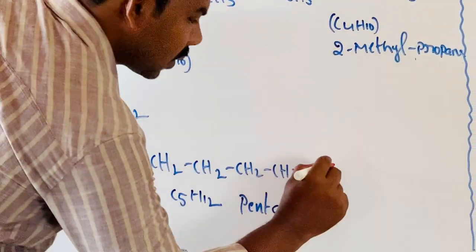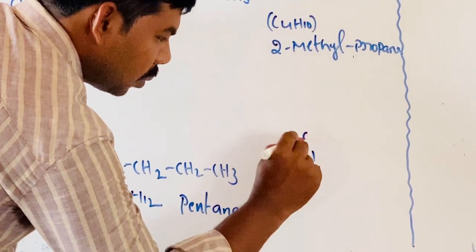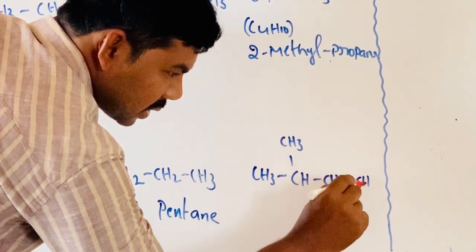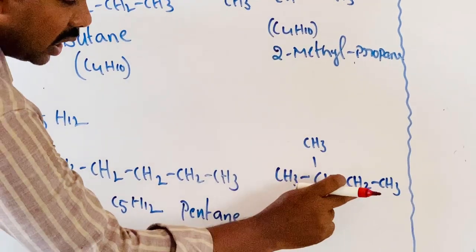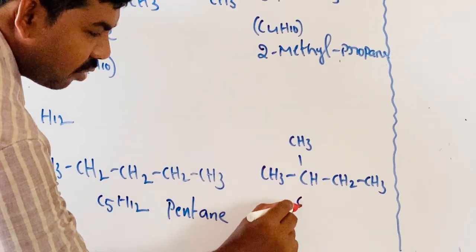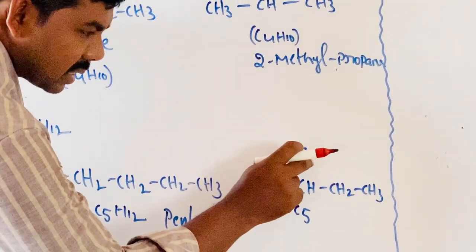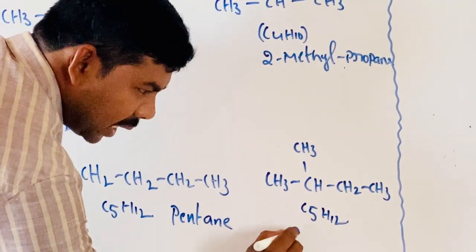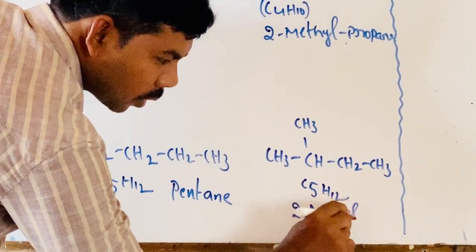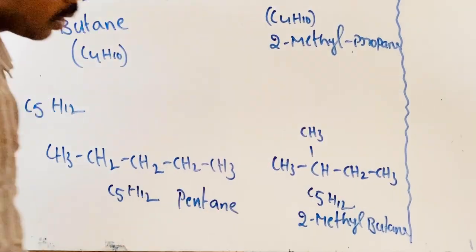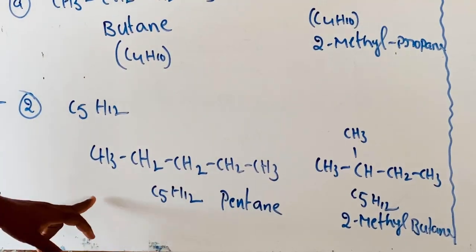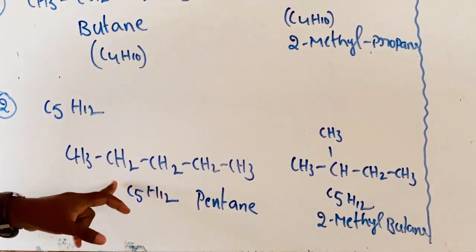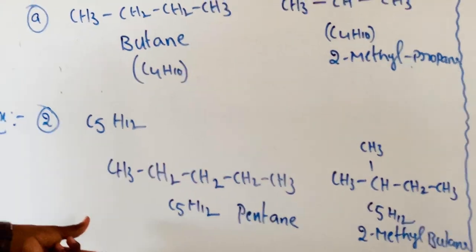Second structure of C5H12: CH3-C(CH3)-CH2-CH3, which also has 5 carbons and 12 hydrogens — same molecular formula C5H12 but a different carbon chain. The longest chain here is 4 carbons, and the second carbon contains a methyl group, so the name is 2-methylbutane. This is chain isomerism.